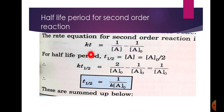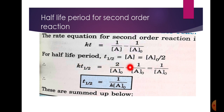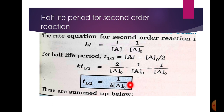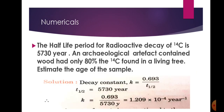Half-life period for second-order reaction: second-order का formula है kt = 1/a_final − 1/a₀। Half-life पर a = a₀/2 रखने पर, kt = 2/a₀ − 1/a₀ = 1/a₀, इसलिए T½ = 1/(k × a₀), जहाँ k rate constant है।